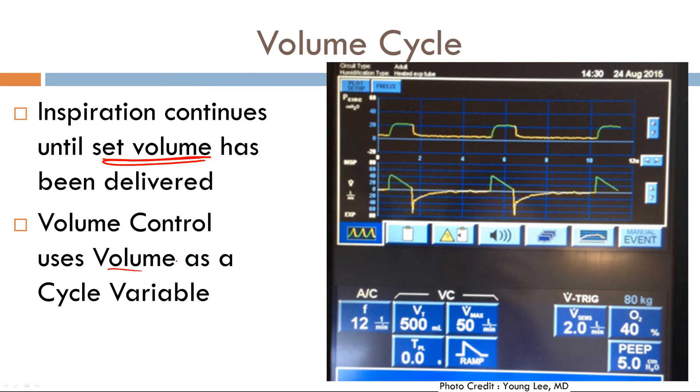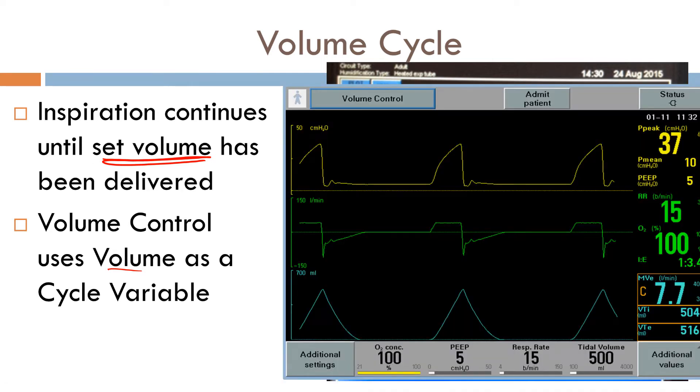So let's take a look here. We have pressure. We have flow here. As you can see, the cycle variable has been set to 500 milliliters. So once 500 cc has been delivered, boom, stops delivering your breath. So let's take a look at this. Here we can see we're in volume control as well. And our cycle variable is here, 500 cc. So once 500 hits here, it stops delivering your breath.